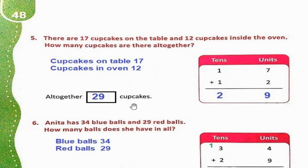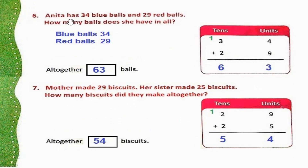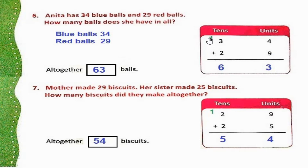Altogether 29 cupcakes. Question 6: Anita has 34 blue balls and 29 red balls. How many balls does she have in all? Blue balls: 34, red balls: 29. Total balls maloom karne ke liye hum in donon ko add karenge. 34 plus 29: 4 plus 9 is 13 — 3 in the unit place and 1 carry forward. 1 plus 3 is 4, plus 2 is 6. So 63. Altogether 63 balls.